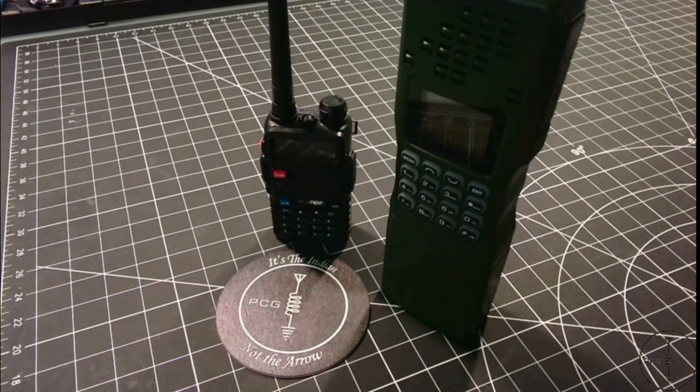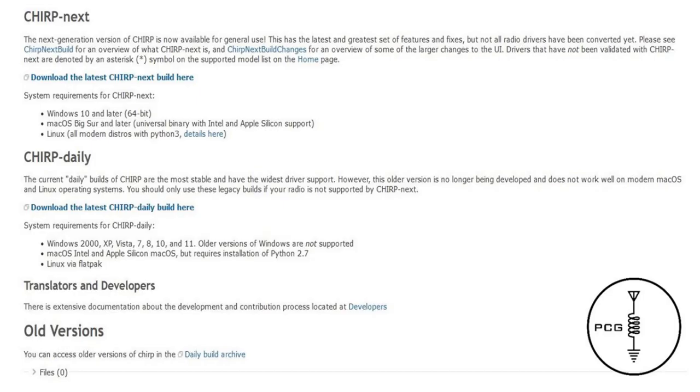It looks like Chirp has made some changes recently to the user interface of their software. They added some features and included some bug fixes for this latest version, which is called Chirp Next. However, according to their website, not all of the radio drivers have been converted over yet, and older versions of their software, which is called Chirp Daily, are still available on their site. But it looks like they're going to sunset that version and direct their development efforts towards the Chirp Next version.